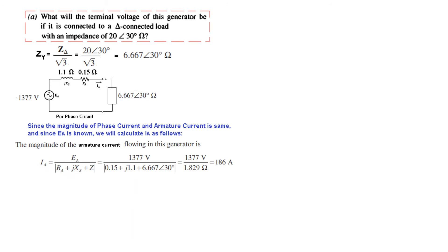Ia, the magnitude of the armature current, equals Ea divided by the total impedance. The magnitude of the total impedance. This is 1.829 ohms. The current is 186 Ampere. So we have calculated the armature current.